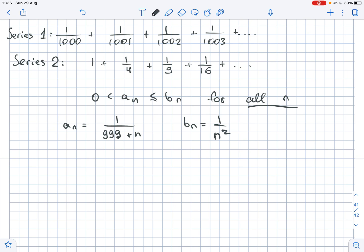Here, now, when we have a general form of an, we understand that an is always less than bn because 1 over 999 plus n is less than 1 over n squared. So that means that n squared minus n minus 999 is less than 0.